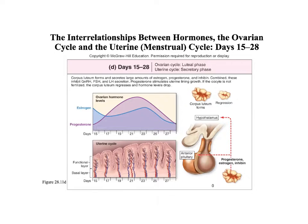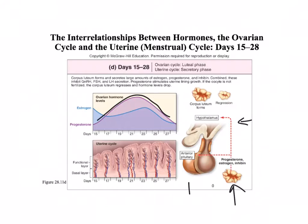After ovulation, the corpus luteum is formed, and it's going to secrete a whole bunch of estrogen. It's also going to secrete progesterone and inhibin. The inhibin is going to stop us from making GnRH, LH, and FSH. The progesterone released from the corpus luteum is going to stimulate the increasing thickness of the uterine wall. Now if the egg isn't fertilized, the corpus luteum just gets smaller, the hormone levels go down, and then the cycle starts all over again.